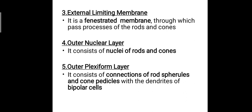The third layer is the external limiting membrane — a fenestrated membrane through which the processes of the rods and cones pass. The fourth layer is the outer nuclear layer, which consists of the nuclei of the rods and cones. The processes of the rods and cones penetrate the fenestrated external limiting membrane, and their nuclei form the outer nuclear layer.